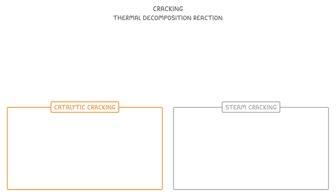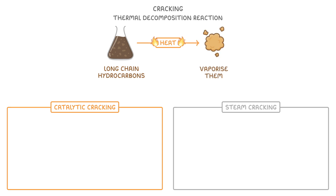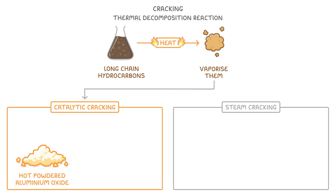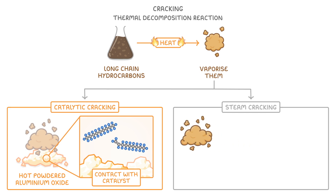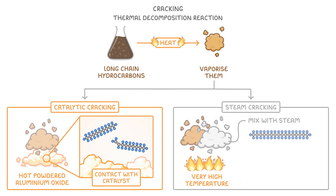Regardless of which method we use, the first step is to heat our long chain hydrocarbons and vaporise them, which just means to turn them into a gas. Then if we were using catalytic cracking, we would have some hot powdered aluminium oxide ready as our catalyst. We'd pass our hydrocarbon vapor over the powder, and as the long hydrocarbons come into contact with the catalyst, they'd split apart into two smaller hydrocarbons. For steam cracking, once we've vaporised our hydrocarbons, we mix them with steam and then heat them to a very high temperature, which again causes the long hydrocarbon chains to split apart into shorter ones.